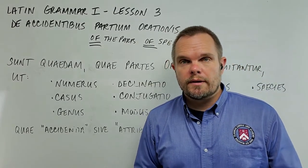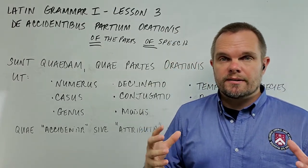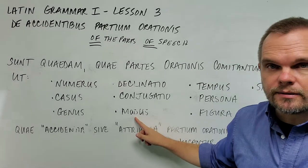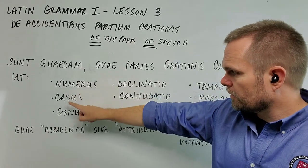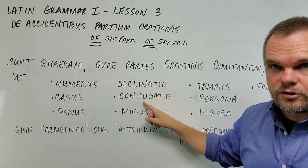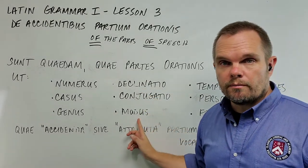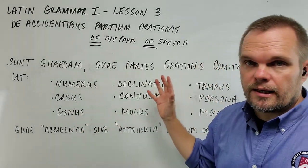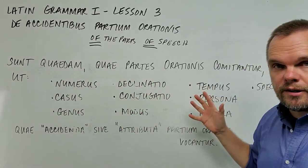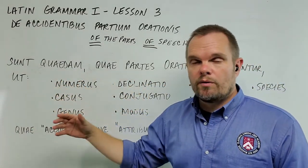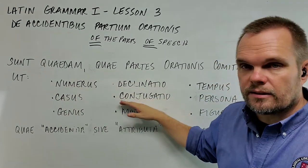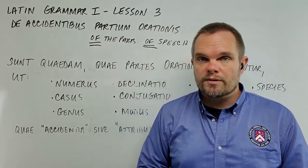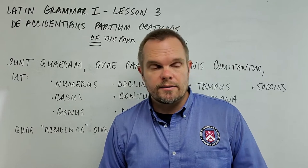In this video, we're going to continue working through lesson three. We're going to study the sixth rule in lesson three, which has to do with the sixth accident of the parts of speech. We've studied number, case, gender, declension, conjugation, and now we're going to study mood — the moods of verbs in Latin. This third lesson has a lot of material, and now we're looking at the sixth accident, which is modus. So let's jump right into rule six out of ten in lesson three.